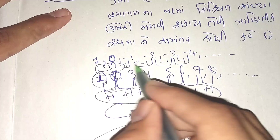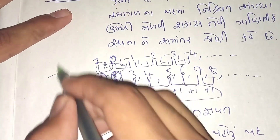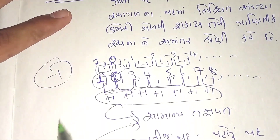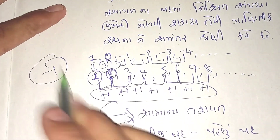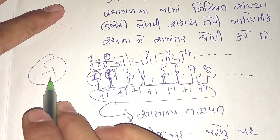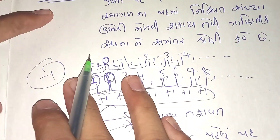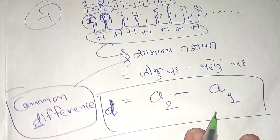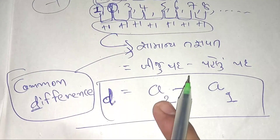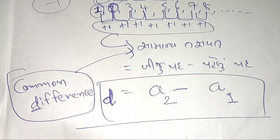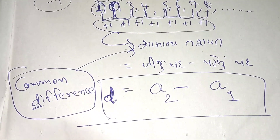Minus 1 equals 0 minus 1 equals 0. તો આ d માટેનો સૂત્ર: a minus a(n) = d.